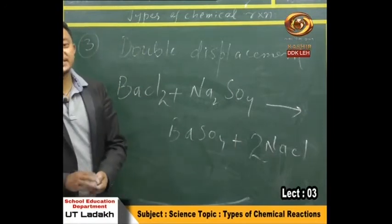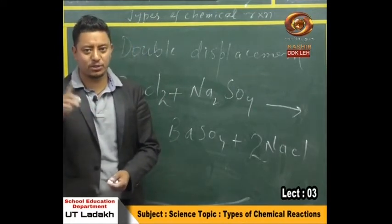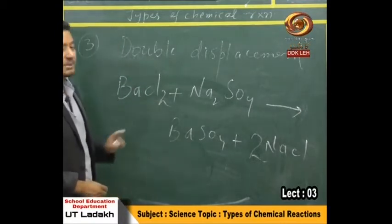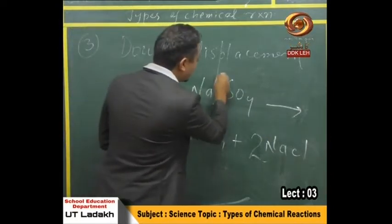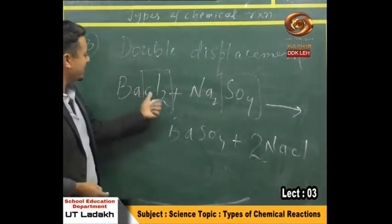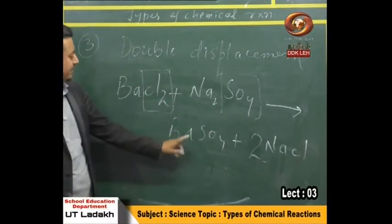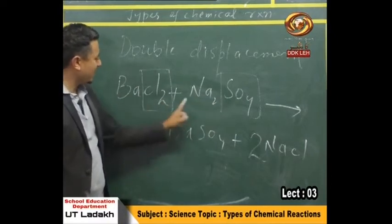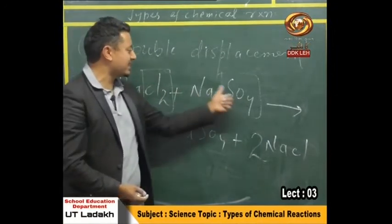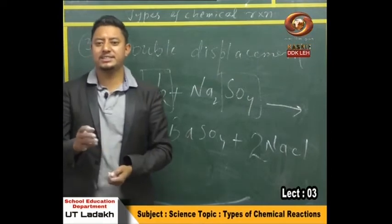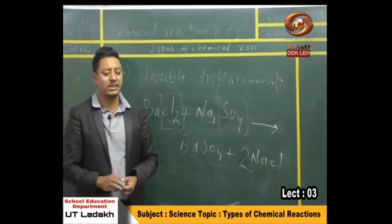Why is this called double displacement? In single displacement, one thing displaces another — iron replaced copper. In double displacement, two exchanges occur: chlorine was with barium, but now chlorine is with sodium; sulfate was with sodium, but now sulfate is with barium. Two ions have been mutually exchanged between the two compounds — that is why it is called double displacement.